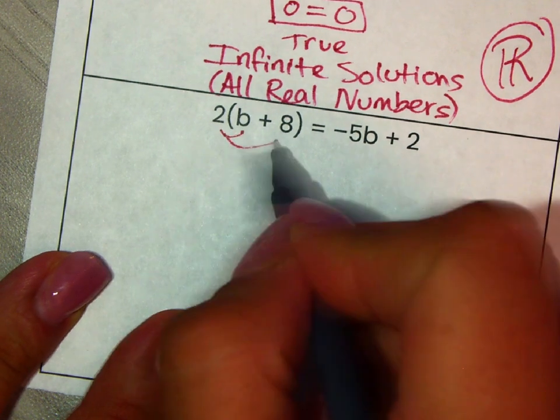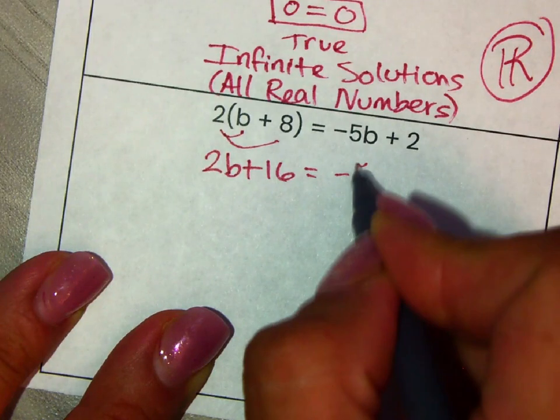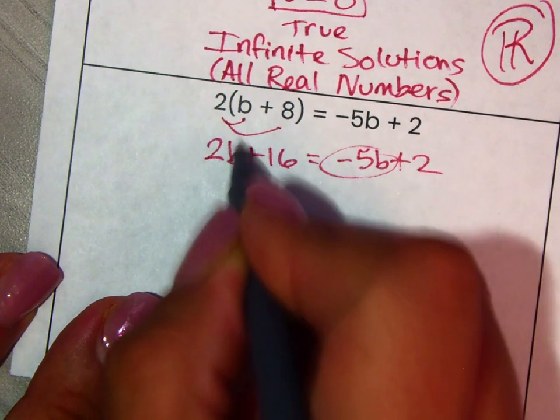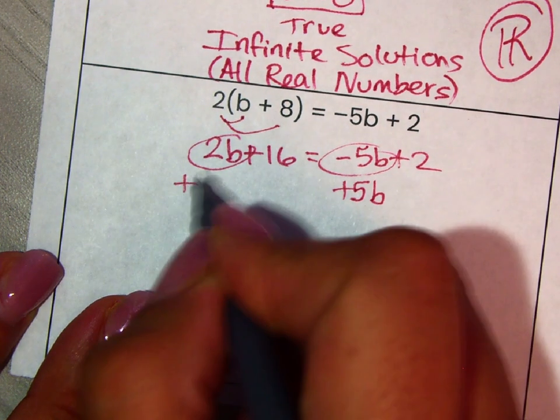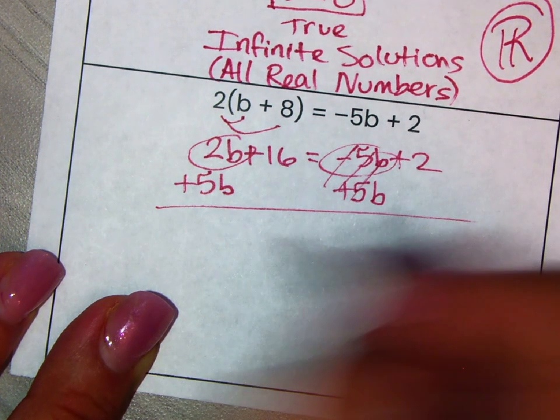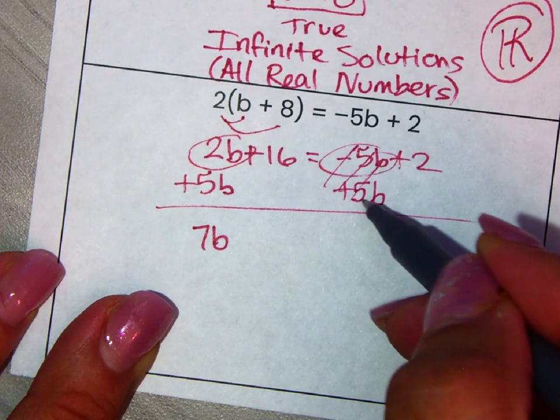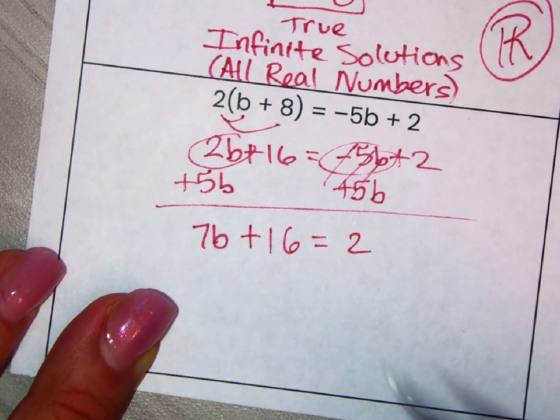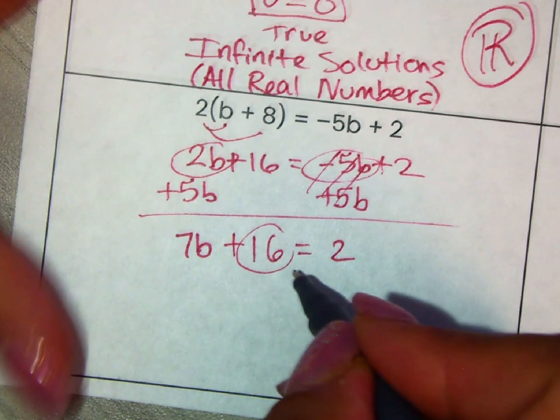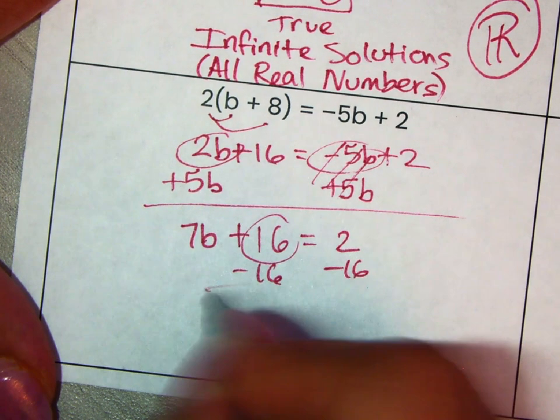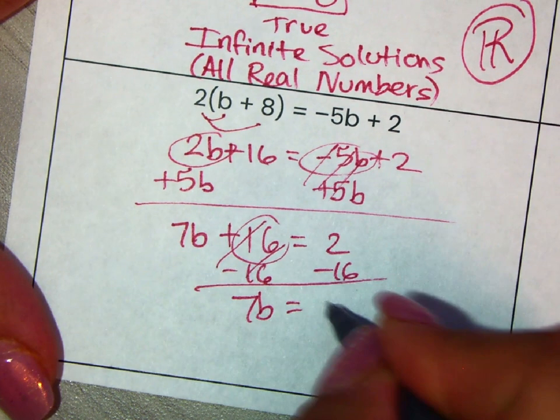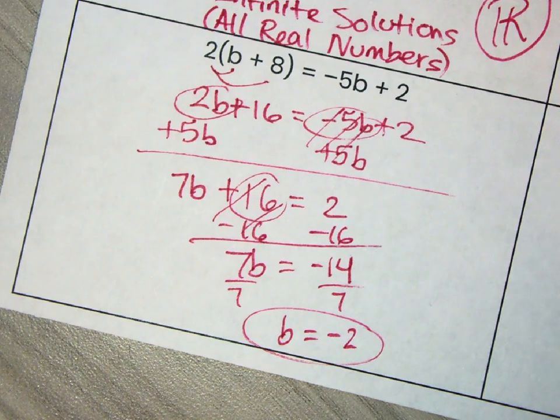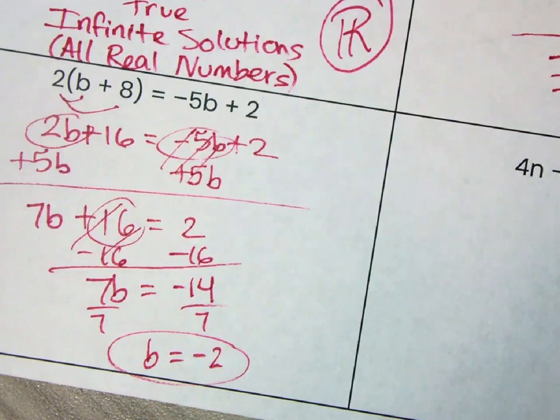So on this one, same thing, distribute. We get 2b plus 16. And then in this case, we don't have any like terms to combine. So we're going to move on to the next step, which is to move the letters to one side. I'm going to move the b to the left side. It's just something I do, but you can always move the b to the right side as well. 2 plus 5 is 7. And just to clarify, I added 5 because you have negative 5b, so positive 5b cancels that. Now we have this, and we're going to solve for b, so that 16 needs to go. And we're going to subtract 16. 7b equals negative 14. And to get the b by itself, you divide by 7. b equals negative 2. So then, you can double-check your answer if you want to.